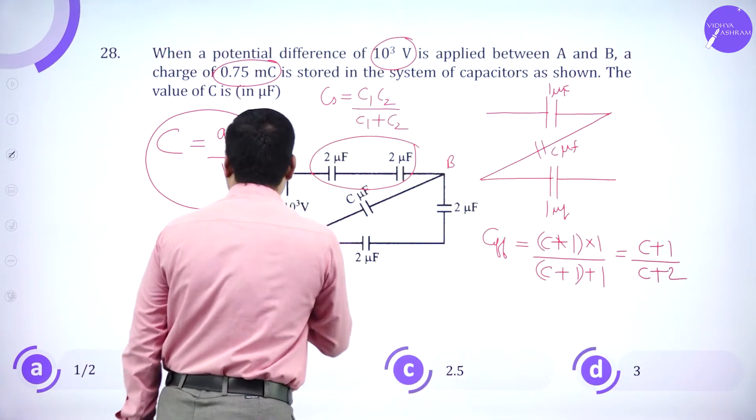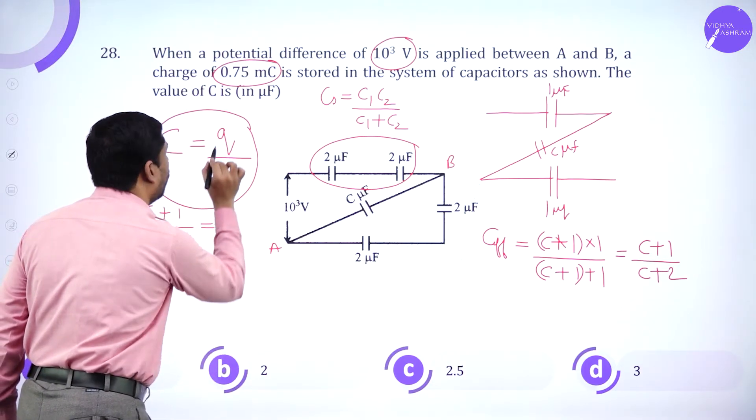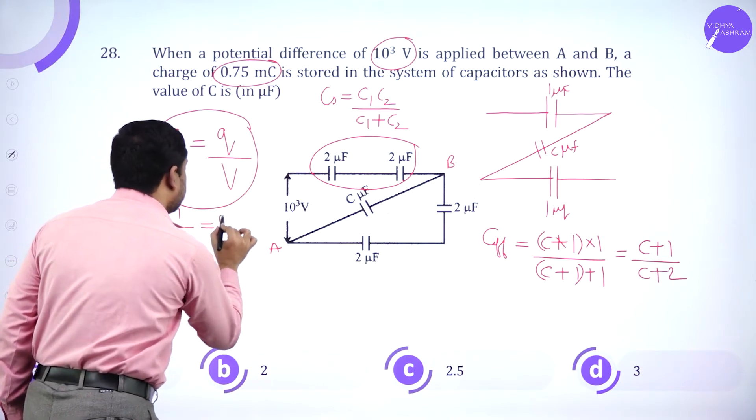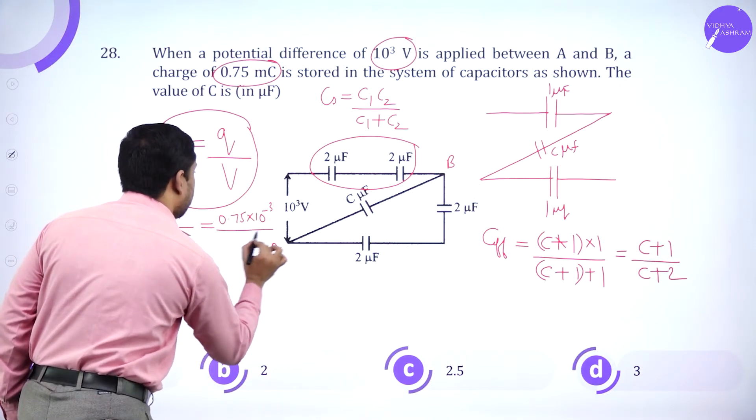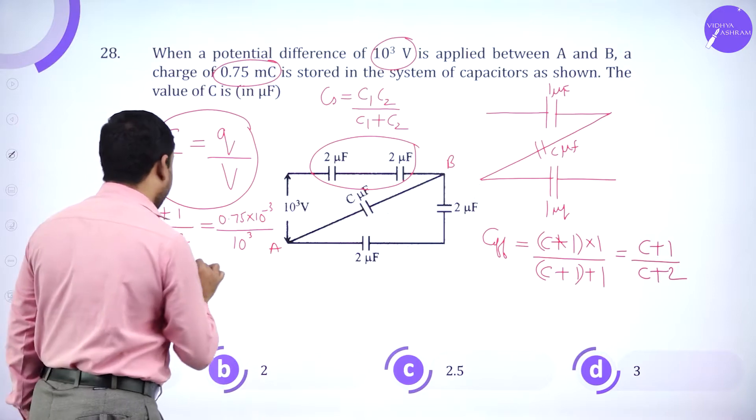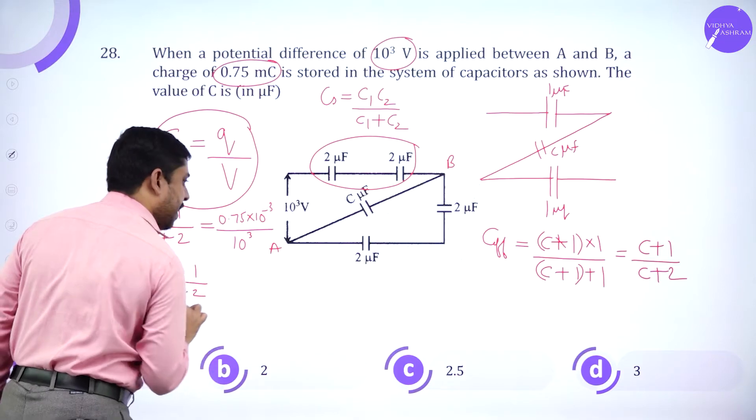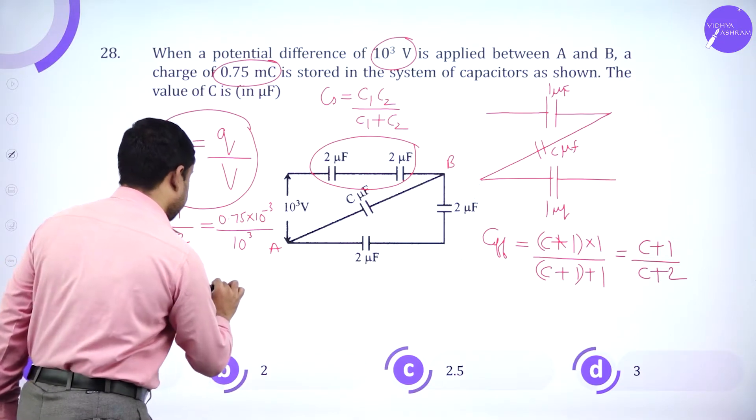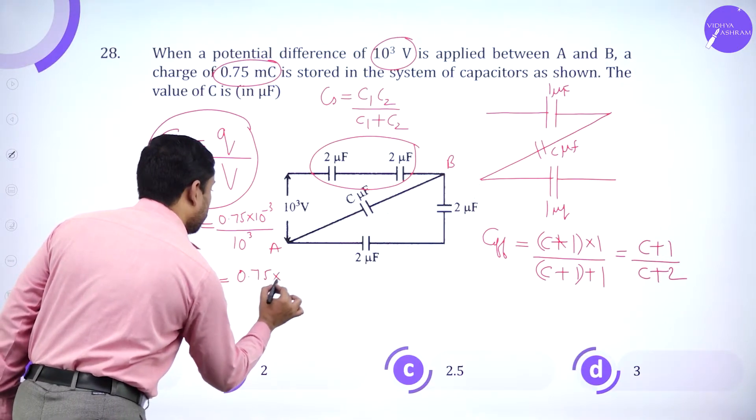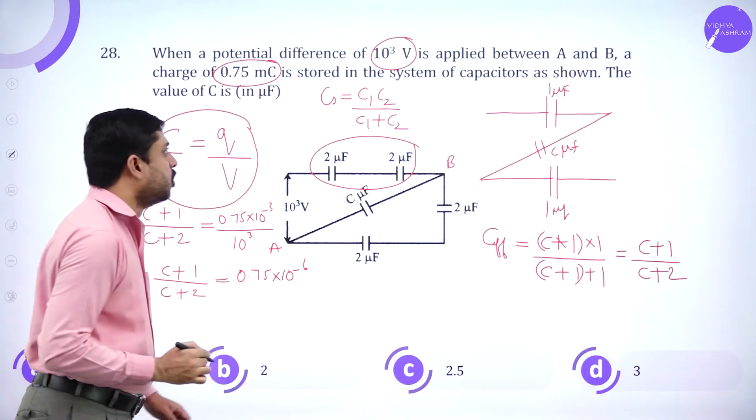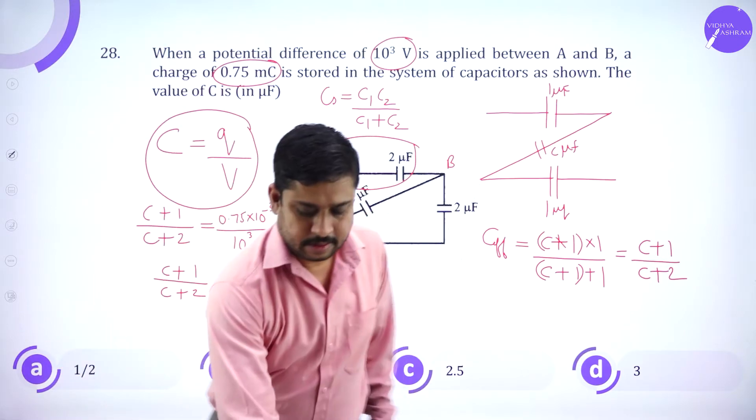So substituting here, C plus 1 divided by C plus 2. So this is equal to 0.75 into 10 power minus 3 divided by 10 power 3. C plus 1 divided by C plus 2. So this is equal to 0.75 into 10 power minus 6. So simplify, you get the value of C.